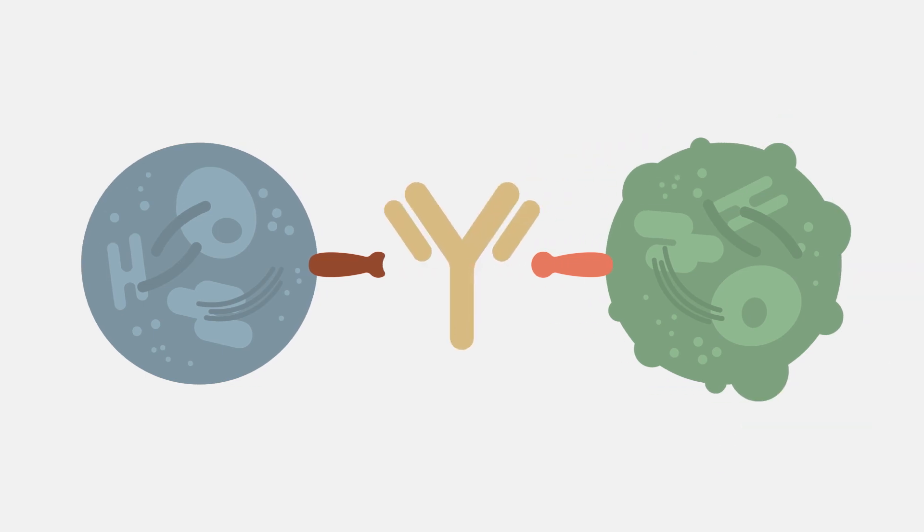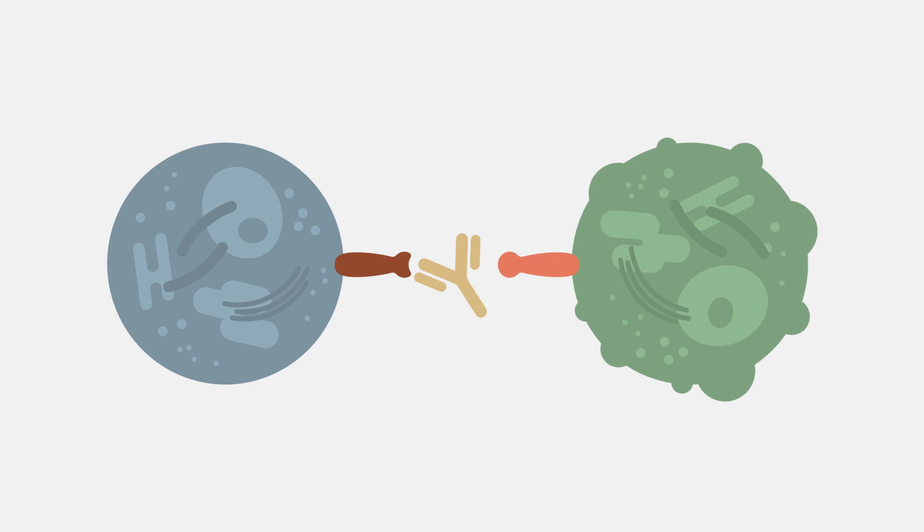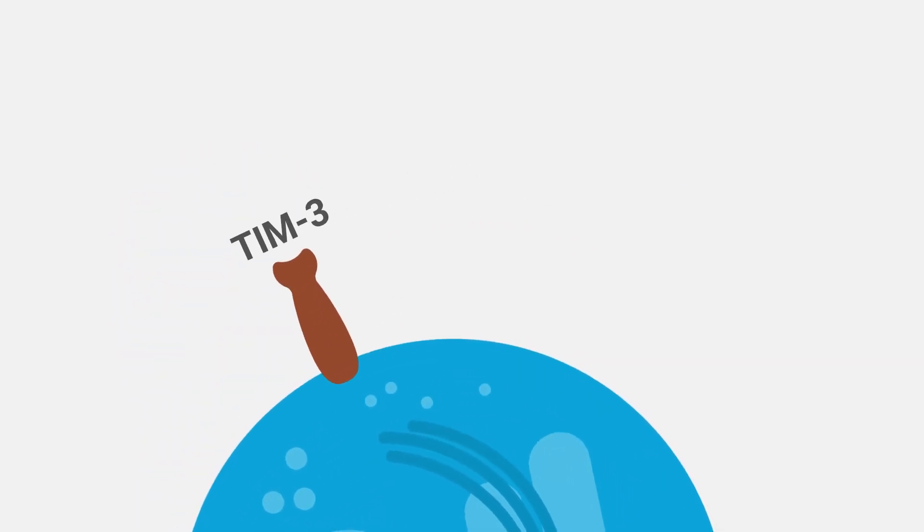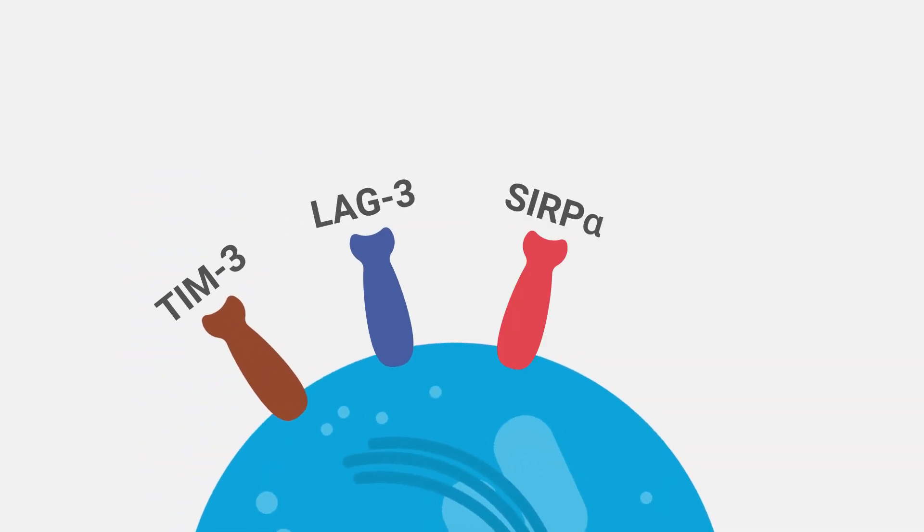Immune checkpoint inhibitors such as monoclonal antibody drugs targeting PD-1 can block the interaction between immune checkpoints and their ligand to release the T cell brakes, allowing it to destroy the cancer cell. These drugs have revolutionized cancer therapy with many new targets emerging from the lab to the clinic.